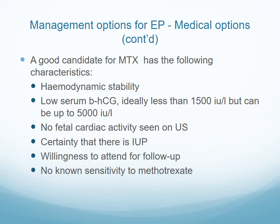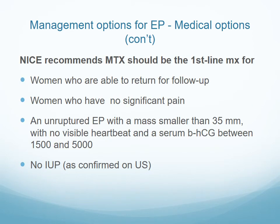A good candidate for methotrexate has the following criteria: hemodynamic stability, low serum beta-hCG between 1500 and 5000, no fetal cardiac activity on ultrasound, certainty that there is no intrauterine pregnancy, willingness to attend follow-up, and no known contraindication or sensitivity to methotrexate. NICE recommends methotrexate as first-line management for women able to return for follow-up, with no significant pain, an unruptured ectopic with a small mass less than 35mm, no visible heartbeat, beta-hCG between 1500 and 5000, and no intrauterine pregnancy.